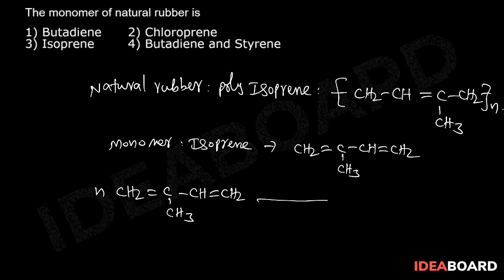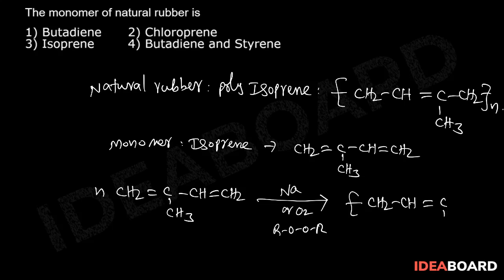CH2 undergoes polymerization in the presence of sodium, oxygen, or peroxide to give CH2-CH double bond, C(CH3)-CH2, n times. That means the monomer of natural rubber is isoprene.